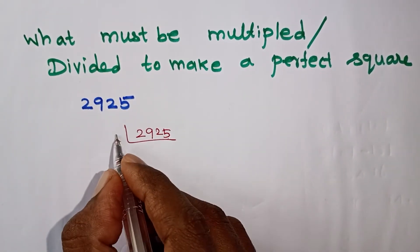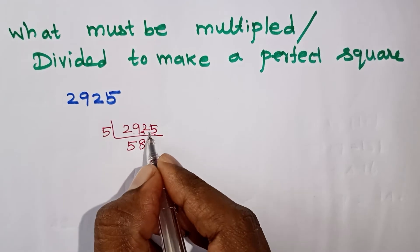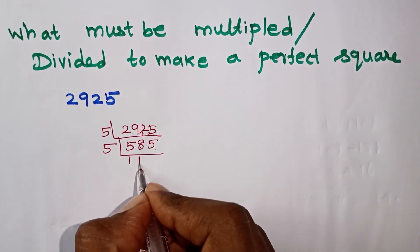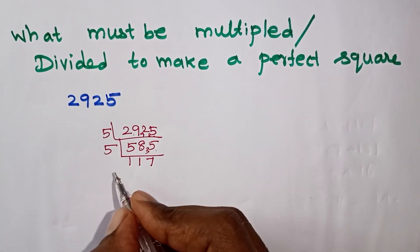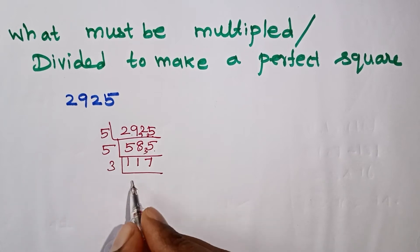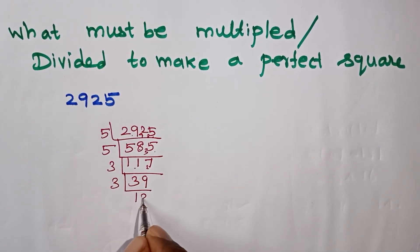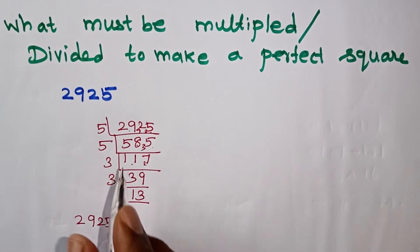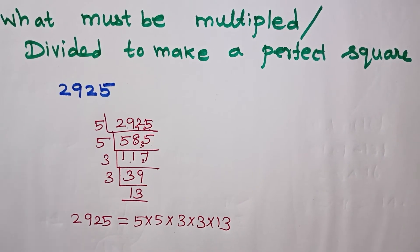Breaking 2925 into prime factors: we divide by 3, 5, and continue until we reach 13, which is a prime number and we stop. So the prime factors of 2925 are 3, 5, and 13. Checking pairs: we have 2 fives, 2 threes, and 1 thirteen. For a perfect square, all prime factors must repeat in pairs.